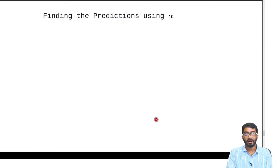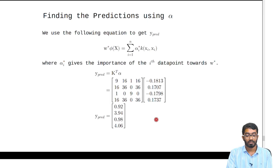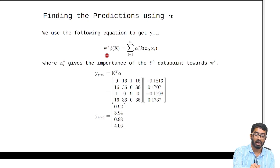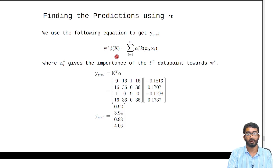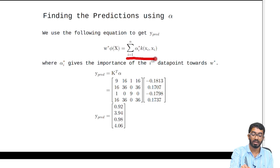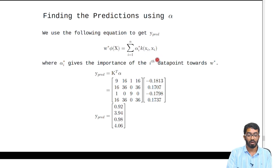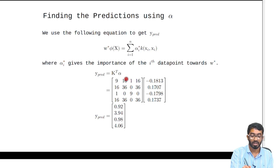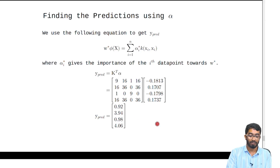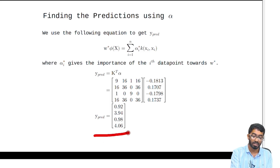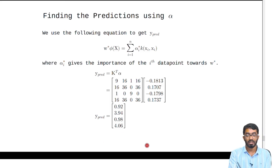Now let's find the predictions using alpha. We know that we predict the values of y using w^T φ(x). But w^T φ(x) is also equivalent to αK or K^T α. So we use the formula K^T α, plug in the values of both K and α, and finally we get our predictions. As you can see, this is very close to our true labels.